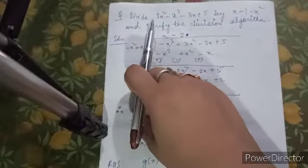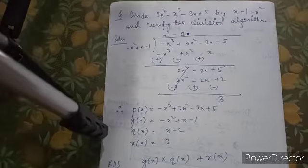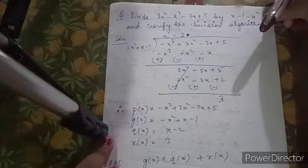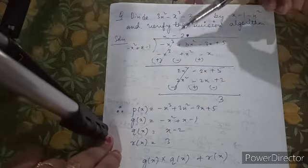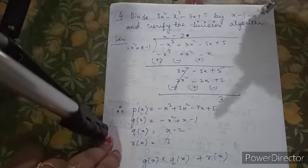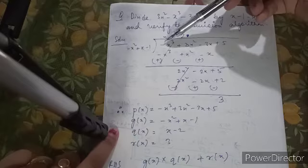Suppose you are given a question: divide 3x² - x³ - 3x + 5 by x - 1 - x² and verify the division algorithm. Whenever you are given any equation, first of all, the highest power should be written first in descending order.